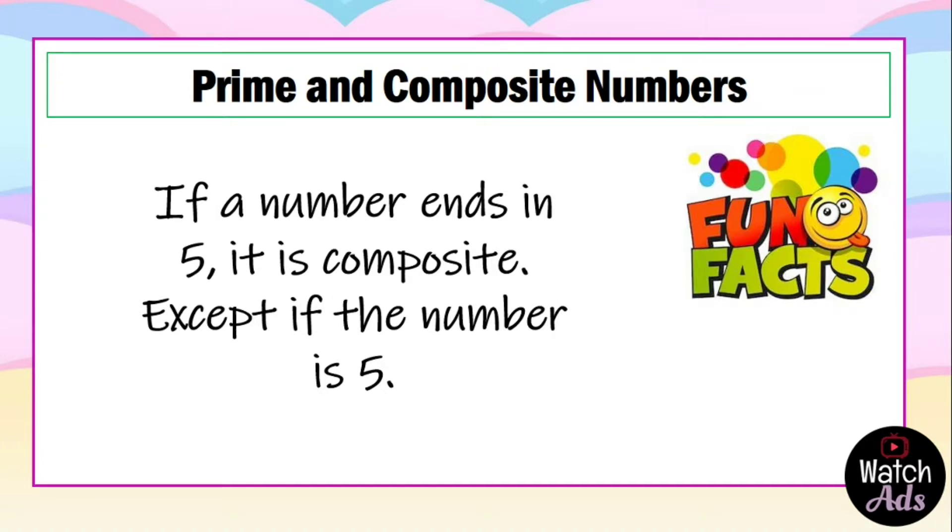If a number ends in 0, 2, 4, 5, 6, or 8, automatically the number is composite, except if the number is 2 or 5. What if a number ends in 1? Example, 21. If you have memorized your table 3 or your table 7, you will identify that it is composite because 21 is a multiple of 3 and 7.